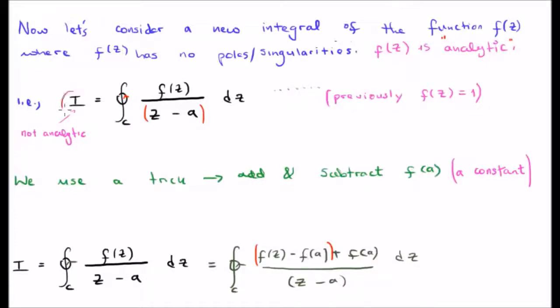In order to calculate or evaluate this particular integral, we utilize a trick whereby we add and subtract f of a. f of a, of course, is a constant. It's simply the value of our function small f of z at the point z equals a.